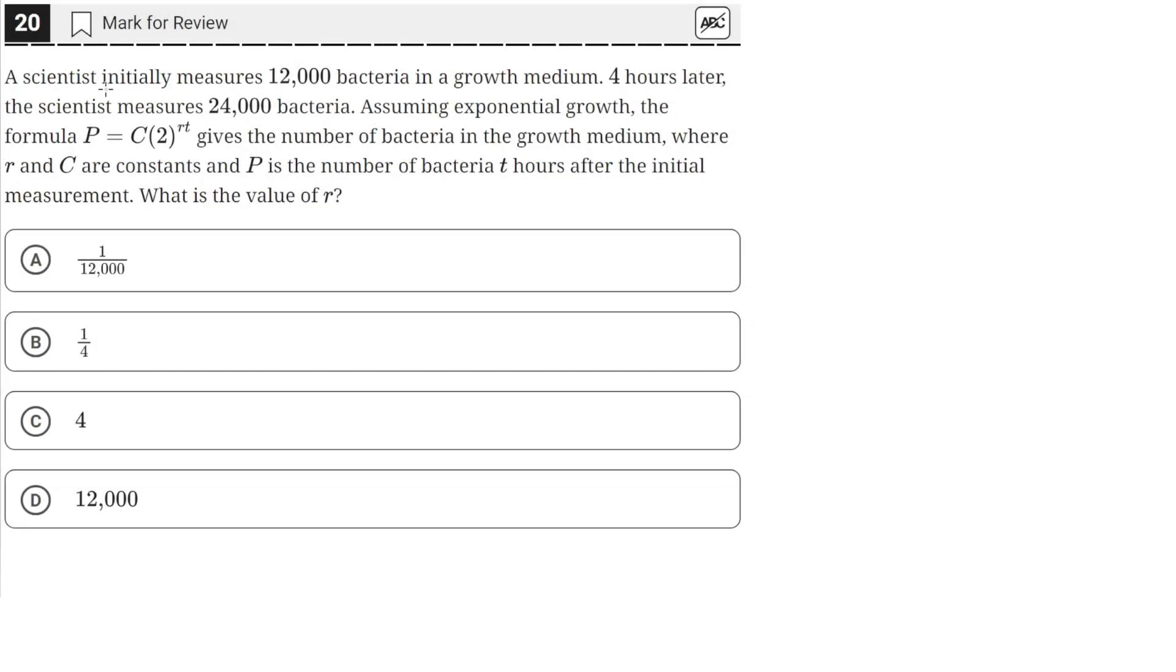A scientist initially measures 12,000 bacteria in a growth medium. Four hours later, the scientist measures 24,000 bacteria. Assuming exponential growth, the formula P equals C times 2 raised to the RT gives the number of bacteria in the growth medium, where R and C are constants and P is the number of bacteria T hours after the initial measurement. What is the value of R?